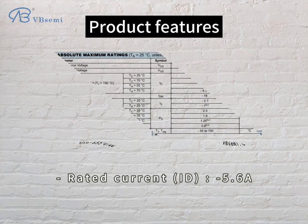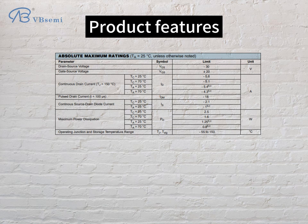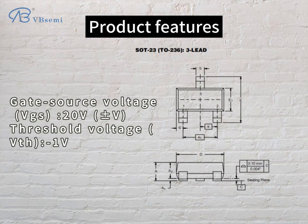Product features: Rated Voltage VDS -30V, Rated Current ID -5.6A, Gate Source Voltage VGS ±20V, Threshold Voltage VTH -1V.